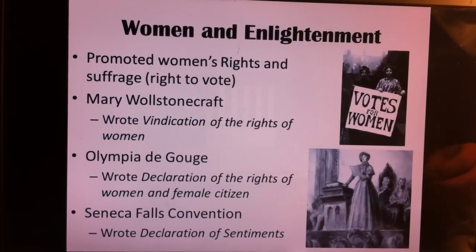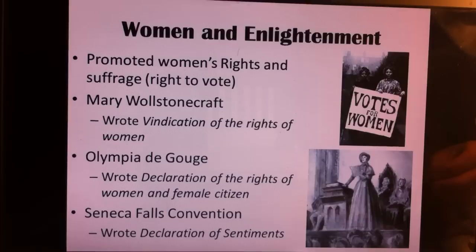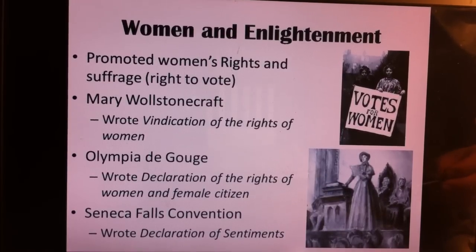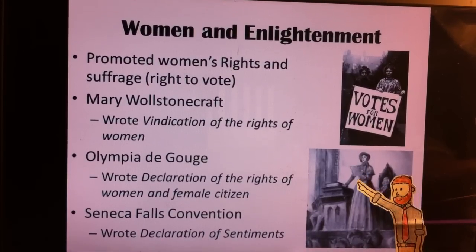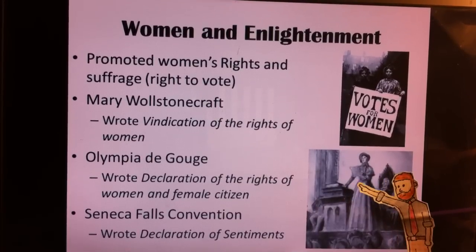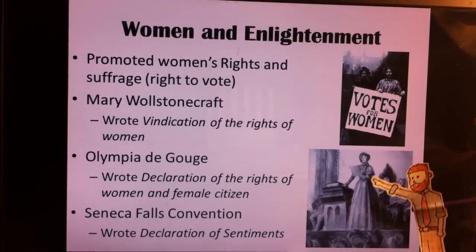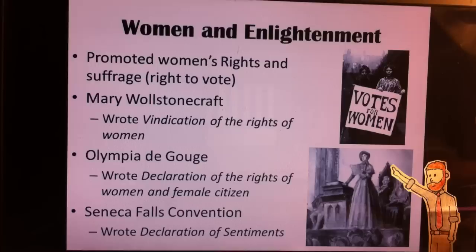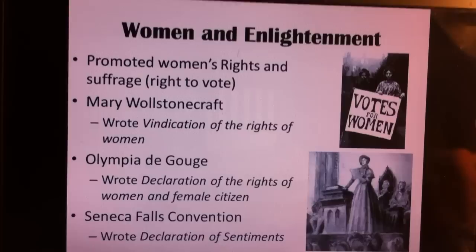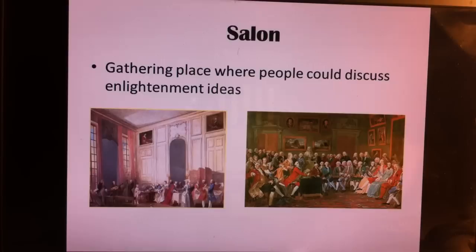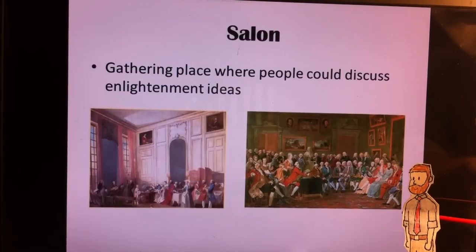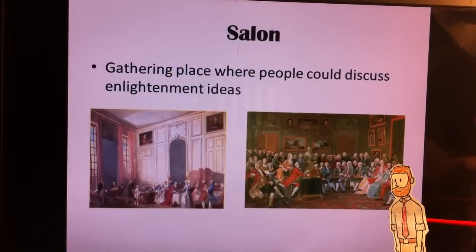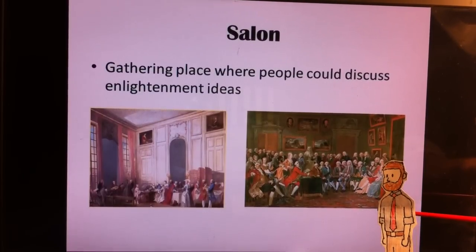Women were also very important in the Enlightenment movement, especially in promoting women's rights and suffrage — the right to vote. Even though women didn't gain the right to vote at the time, they did contribute significantly to Enlightenment. Mary Wollstonecraft wrote The Vindication of the Rights of Women; Olympe de Gouges wrote The Declaration of the Rights of Women and Female Citizens; and the Seneca Falls Convention produced The Declaration of Sentiments. One big way women played a part was hosting salons — gathering places where people could discuss Enlightenment ideas about the social contract, people's rights, and religious freedom, which helped get Enlightenment moving.